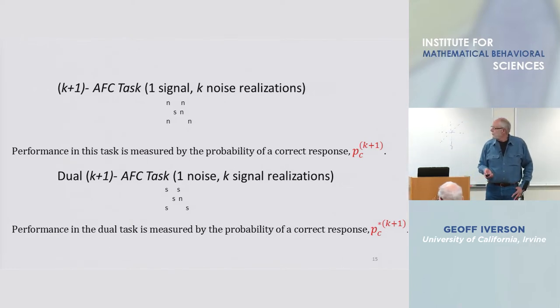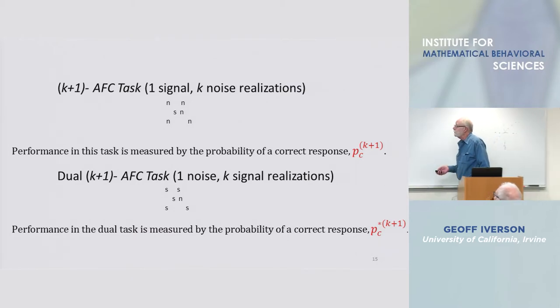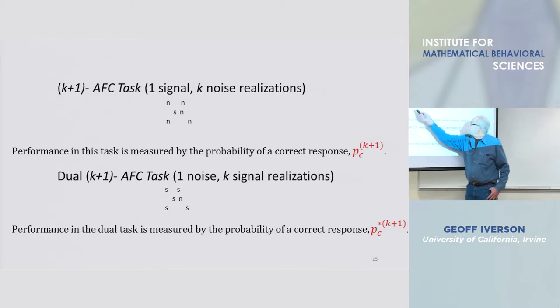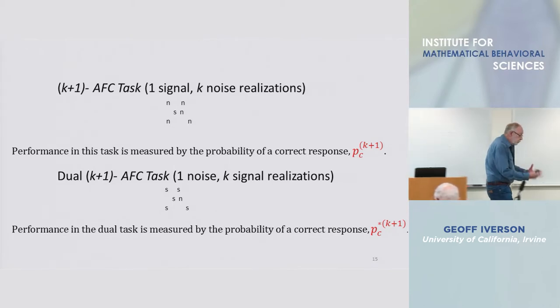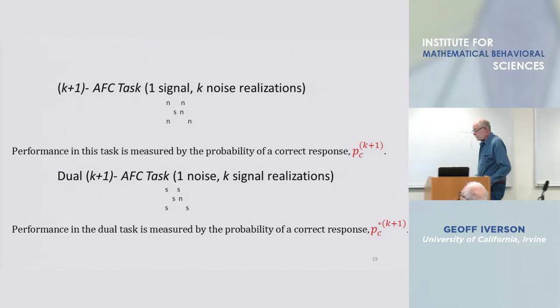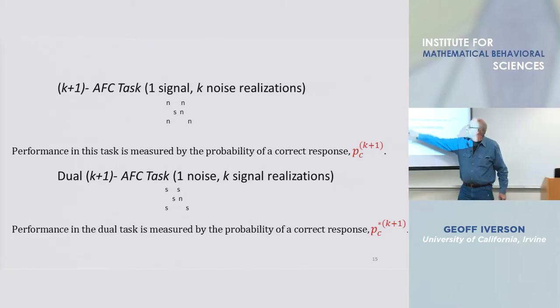Now let me talk briefly about the general forced choice task. There are two tasks, one involves one copy of signal, one old word, buried in a collection of k new words, and the subject's task is to pick the odd man out, indicate S.